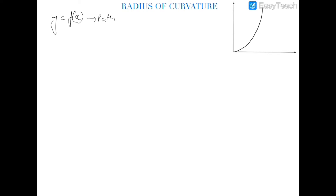So let's suppose this path looks like a curve, and at any point — let's call it point A — we have to find out the radius of curvature r_A. I am deriving a general formula which is very helpful in solving problems. Let's draw a tangent at this point on the curve, and the angle made by this tangent with the x-axis is theta. A small displacement along this tangent is ds.